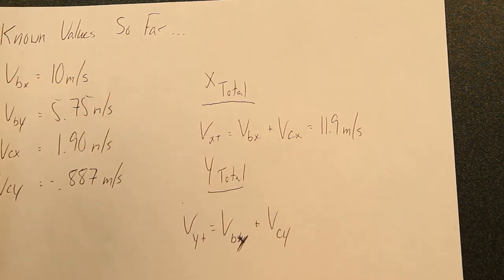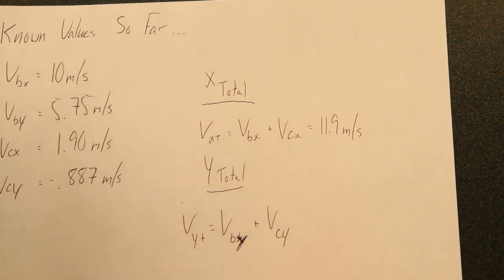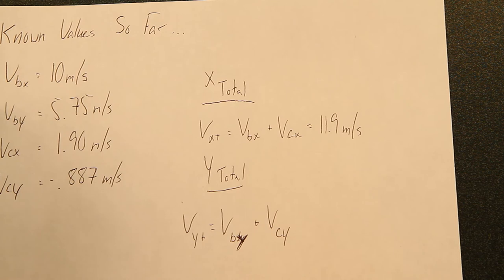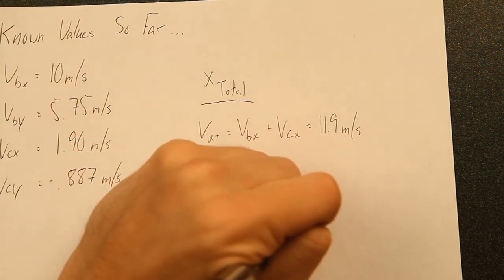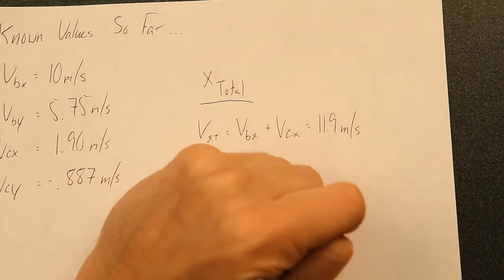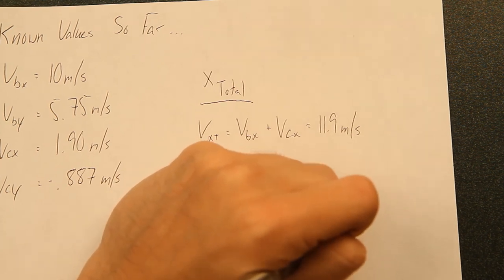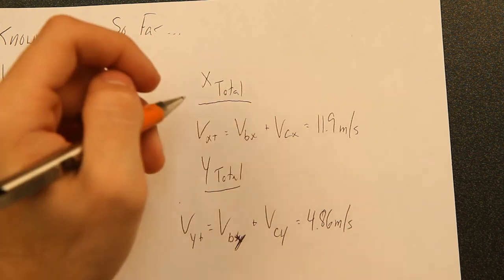If you add those together, your b of y along with c of y, you're going to get a total of 4.86 meters per second. So now you have those two values.